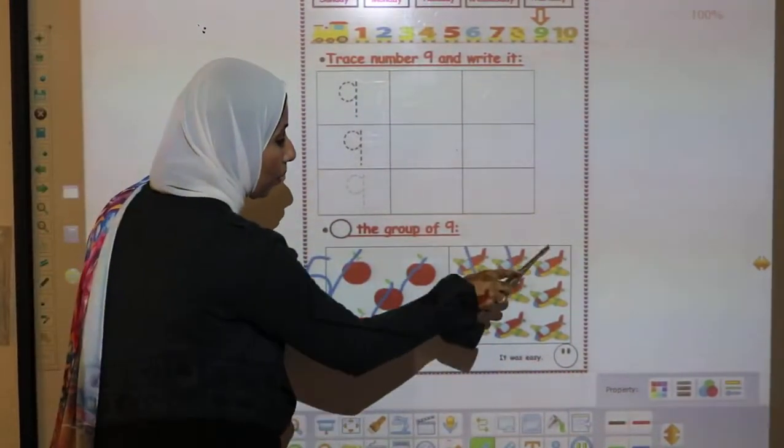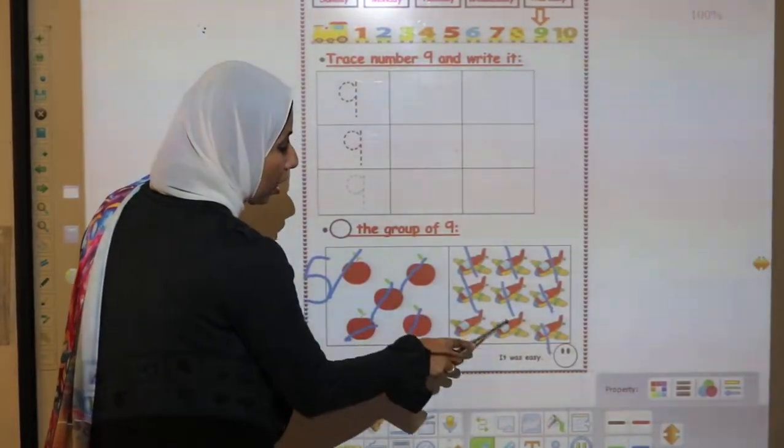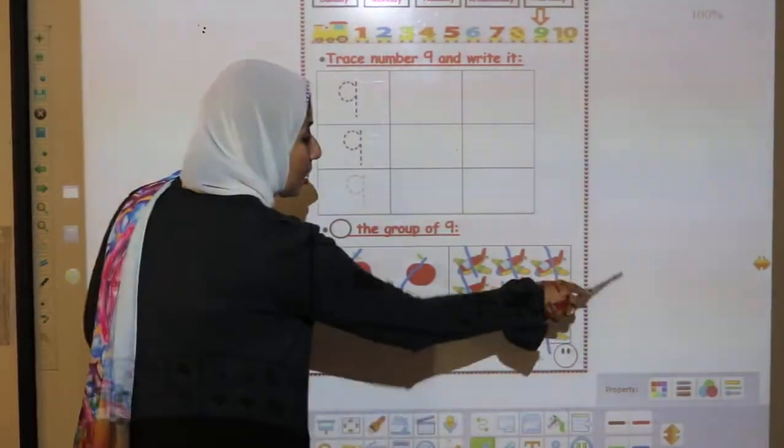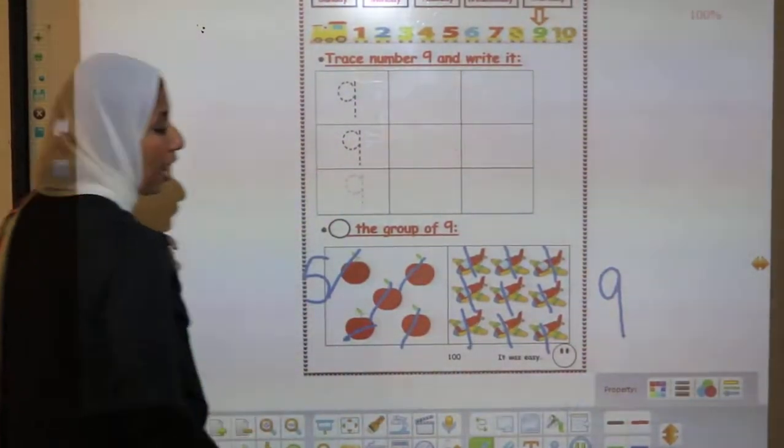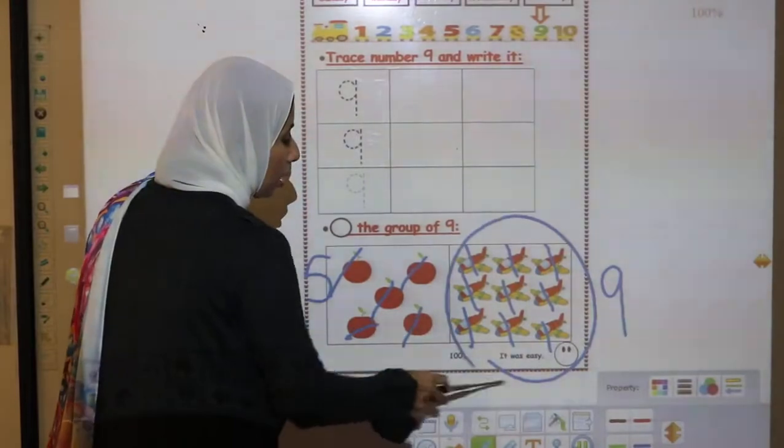1, 2, 3, 4, 5, 6, 7, 8, 9. Yes! Here we have 9 airplanes. So, we will make a circle.